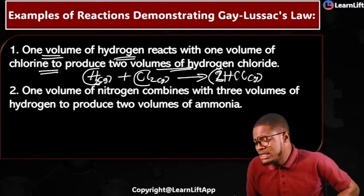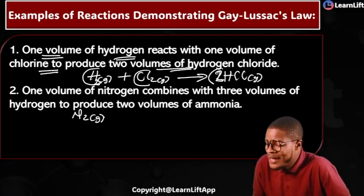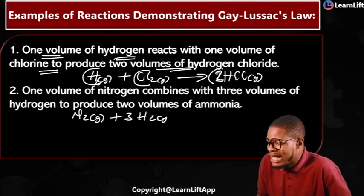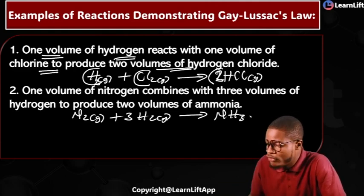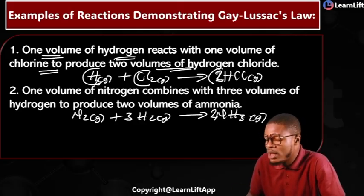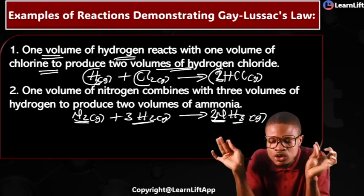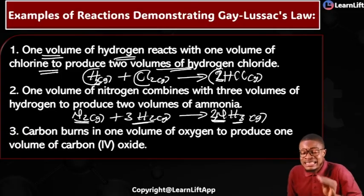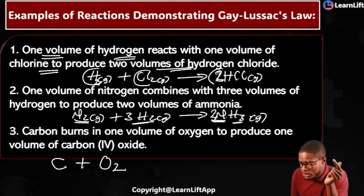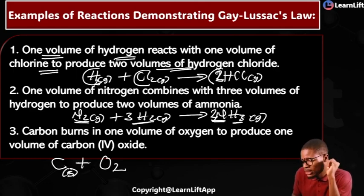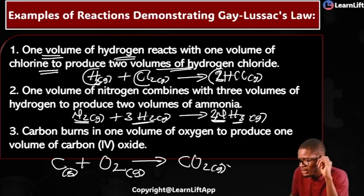Example two: one volume of nitrogen gas combines with three volumes of hydrogen gas to form ammonia, NH₃. Two volumes of ammonia are formed. The balanced equation is N₂(g) + 3H₂(g) → 2NH₃(g). Check the balance — nitrogen: two on each side; hydrogen: six on each side (3×2=6). That's balanced. Example three: carbon burns in oxygen. Carbon is solid, and it burns in one volume of oxygen gas to give CO₂ gas.